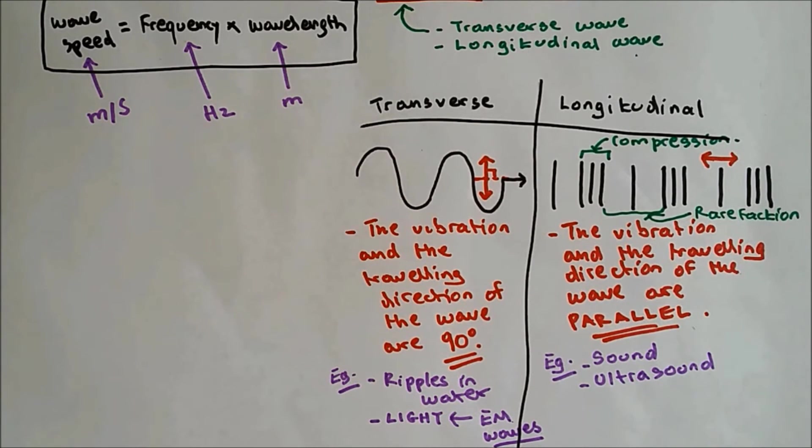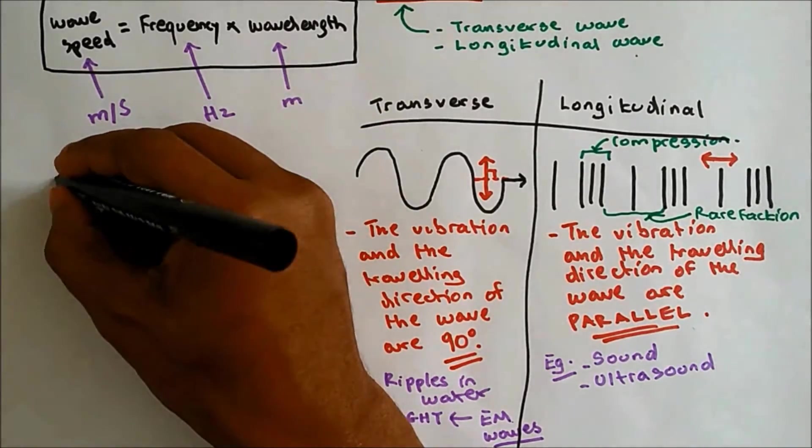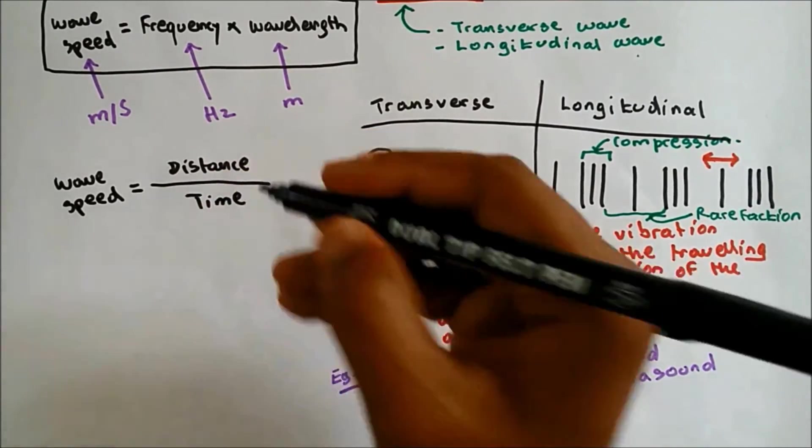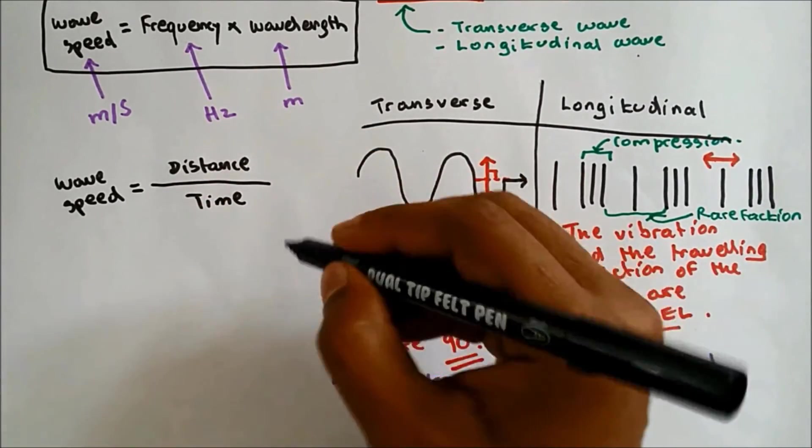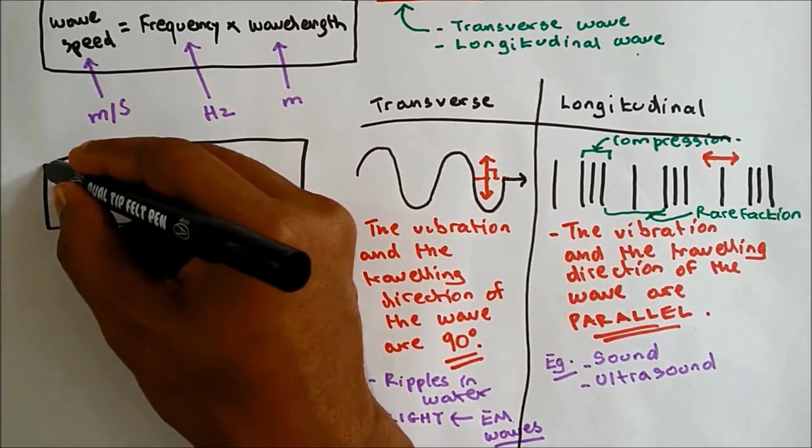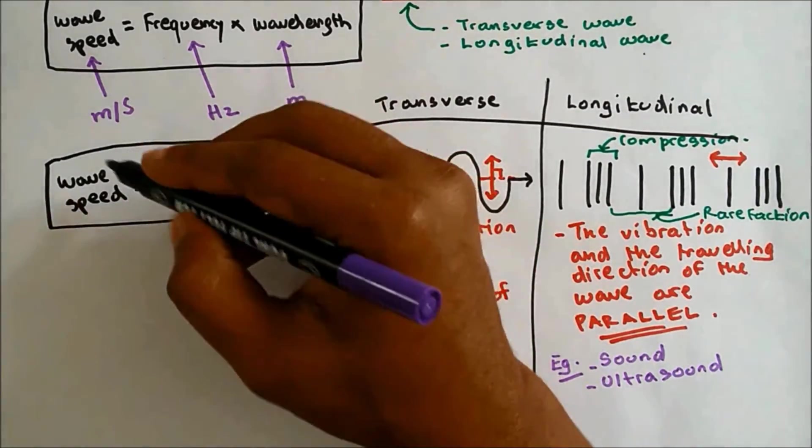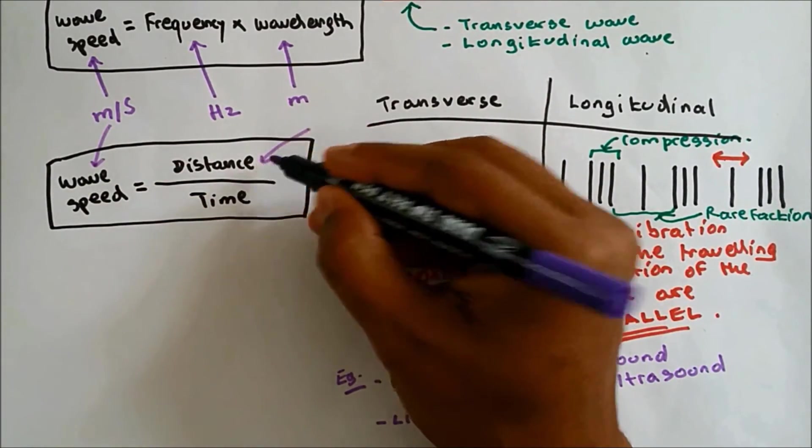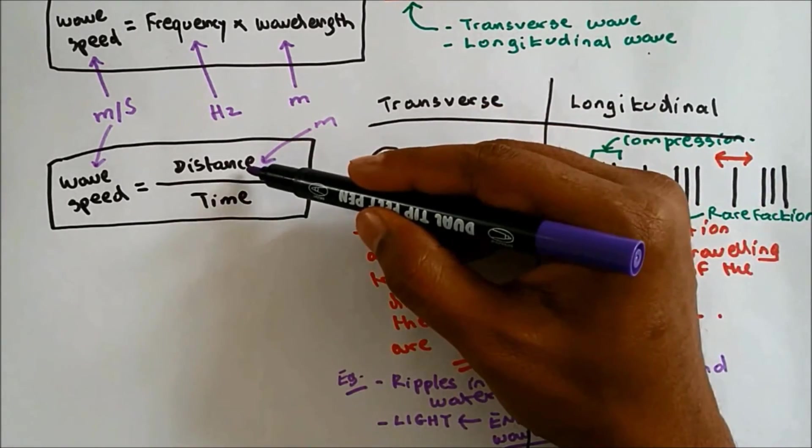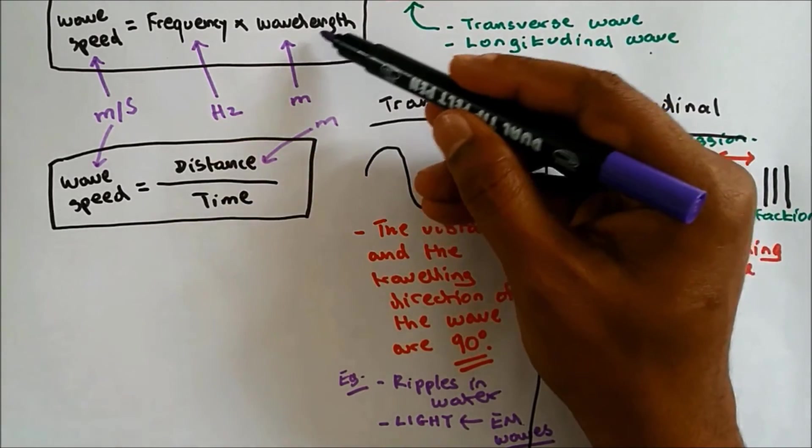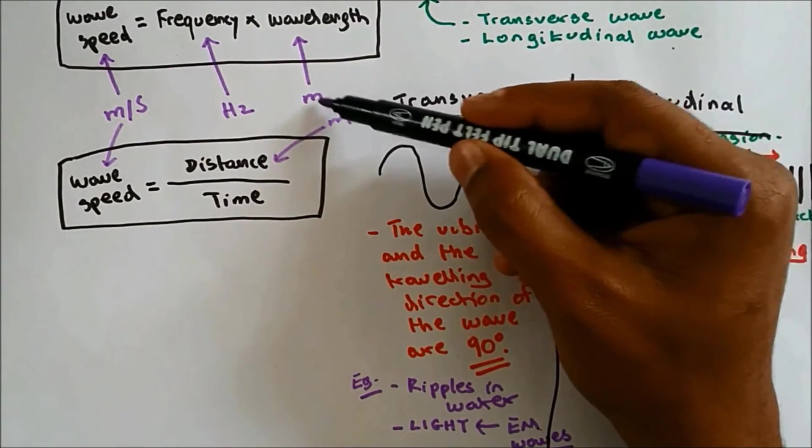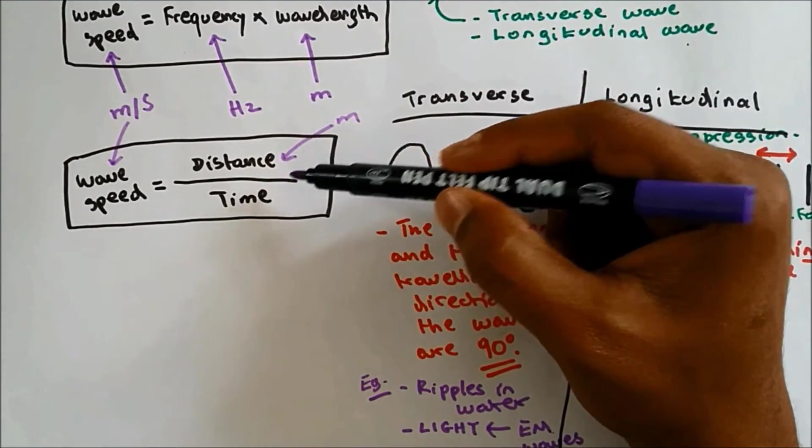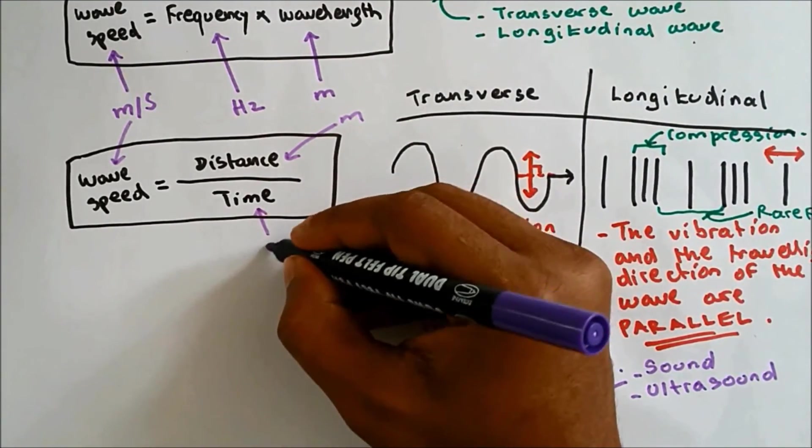You could also use a different formula to find the wave speed. And that is wave speed is equal to distance traveled divided by time. So the unit of wave speed is meter per second. Distance is meter. But this distance is not the same as the wavelength. It's different. They have the same unit, but they're not the same thing. And the time should be in seconds.